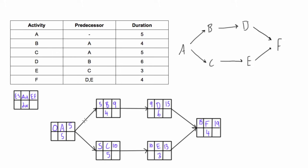Welcome back everybody. In the last video we did the forward pass in a PDM network diagram to calculate the early start and early finish of each activity. In this video we'll be doing the backward pass to calculate the late start and late finish of each activity.